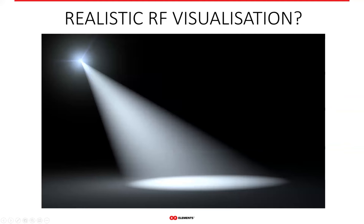A good example of coverage visualization is provided by visible light, which is also an electromagnetic wave — just like 5 GHz or 2.4 GHz RF signals, except at much higher frequencies. The circular spotlight on the ground, which the light is pointed at, is the coverage, and the flashlight is the antenna in this case. Except for visible light, electromagnetic waves are invisible, which makes visualization of RF coverage more obscure.